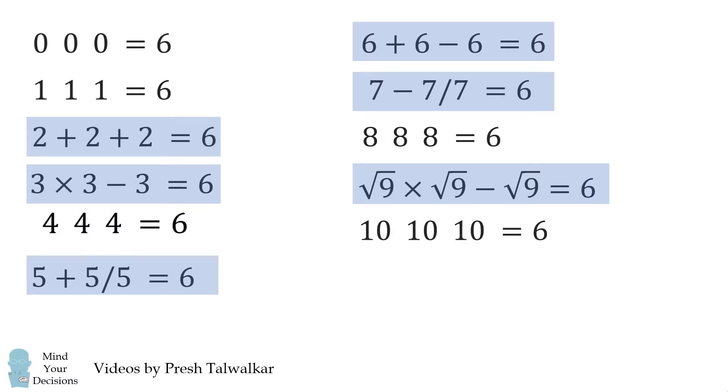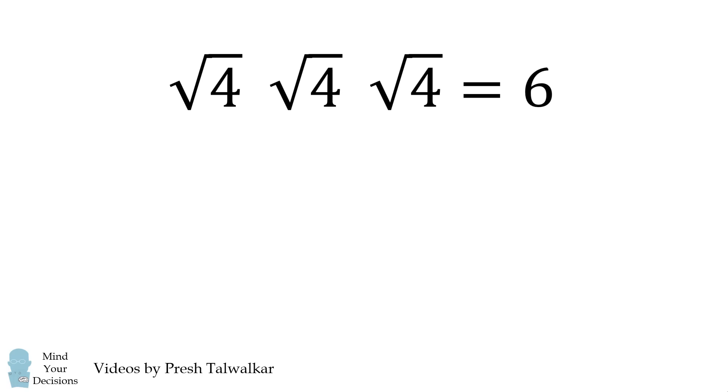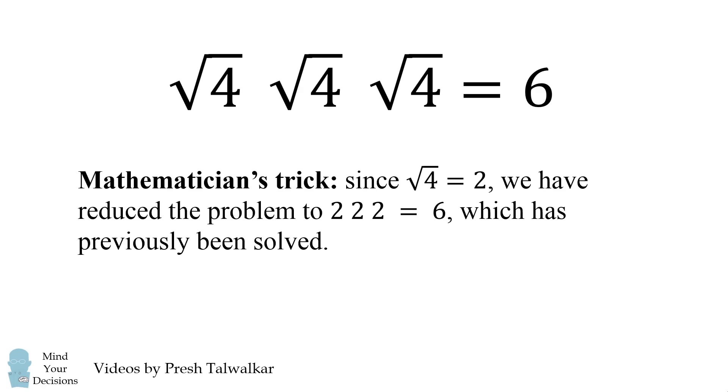Now, let's go to 4 4 4 is equal to 6. Well, once again, we can take the square root of each of these numbers. Again, we have our handy trick. Since the square root of 4 is equal to 2, we have reduced the problem to 2 2 2 is equal to 6. And that's previously been solved.